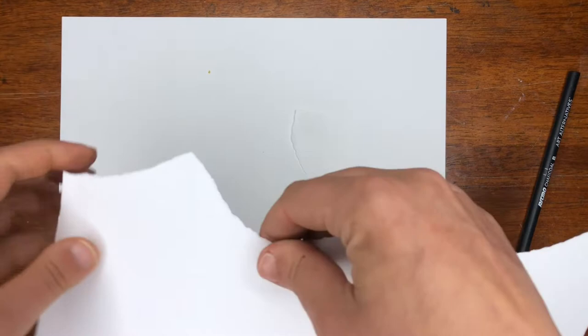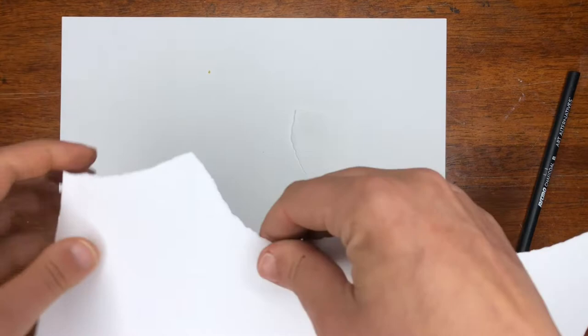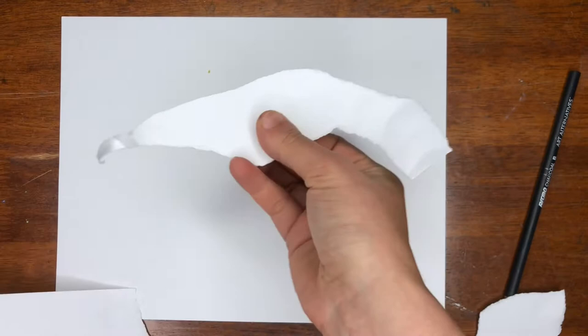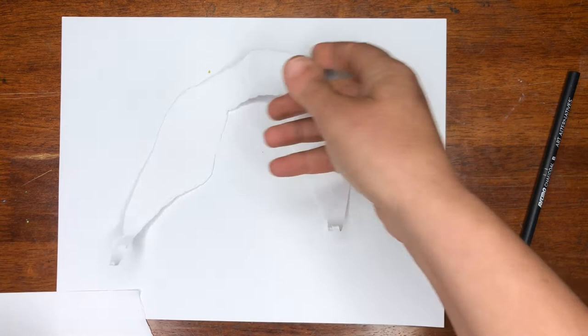Don't just rip haphazardly. Do try to think about the shapes you're creating. Maybe we could do curved lines, more severe edges. We don't need to rip a bunch. We can reuse our rips.